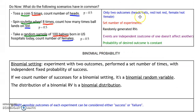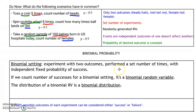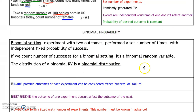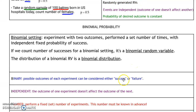All of these scenarios are going to be leading us towards the idea of binomial probability. If these scenarios meet certain criteria — whether they have only two outcomes, whether there's a set number of experiments, whether the events are independent, and whether the probability of the desired outcome is constant — we can refer to them as a binomial setting. If we count the number of successes for a binomial setting, that's called a binomial random variable, and the distribution of a binomial random variable is a binomial distribution. We can use this to simplify the calculation of probabilities.